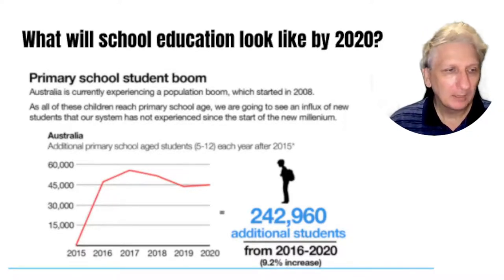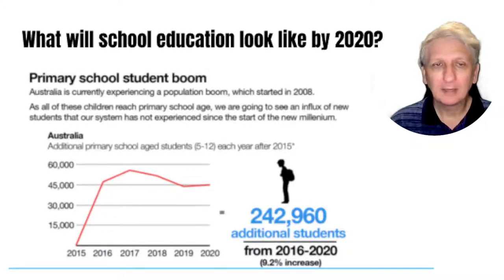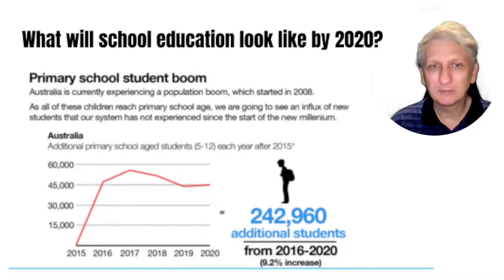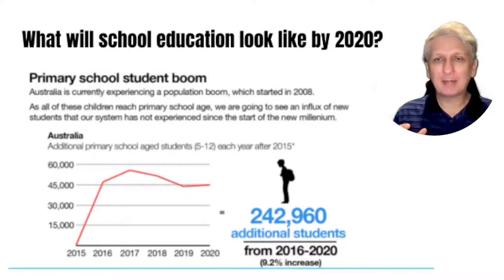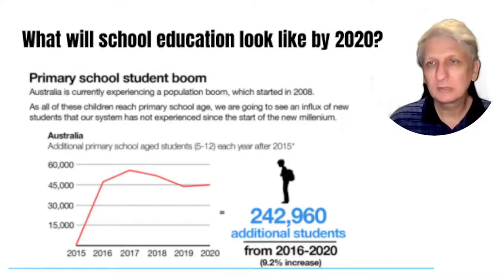In Queensland schools, there was a surge when grade 7 moved from primary school to becoming part of high school, creating a bubble effect of increased numbers in that year level, impacting upon universities around 2023-24. There's also a significant teacher shortage happening globally, with a lot of predictions and forecasts being made around its impact.